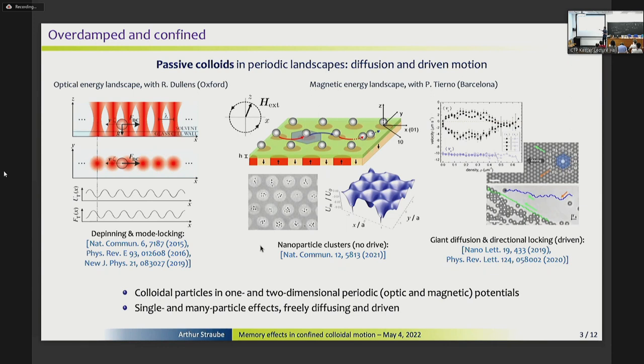So on the other hand, if you go further, the geometry can be two-dimensional. The particles, there can be a lot of nanoparticles trapped in a potential, they can be interacting on their own, and additionally, you can drive them, and this gives you the possibility of having giant diffusion and also directional locking. When the particles deflect from the direction of the driving force, they start to move because of the interaction in some other direction.